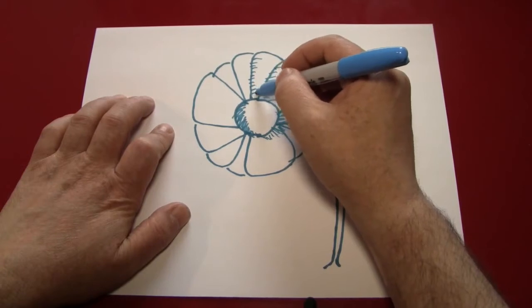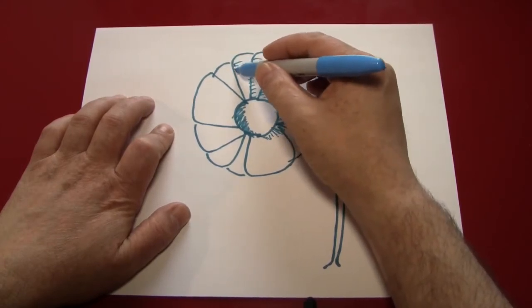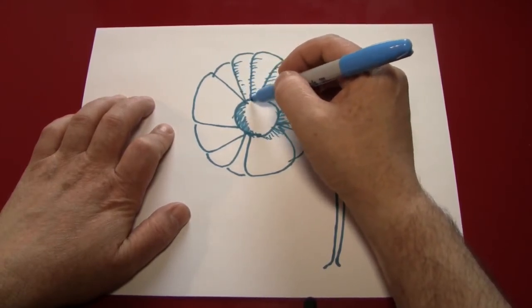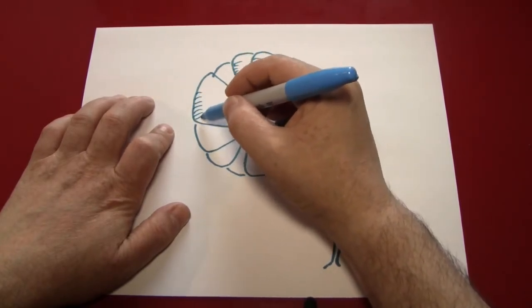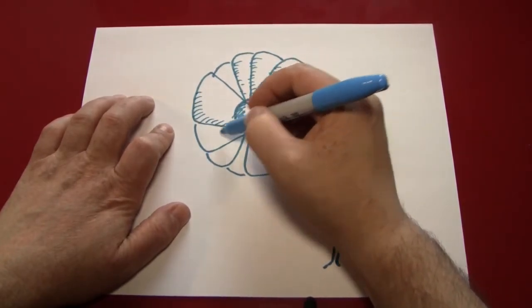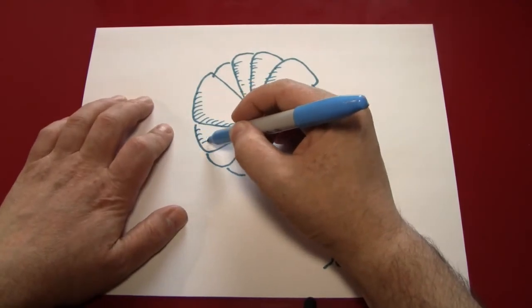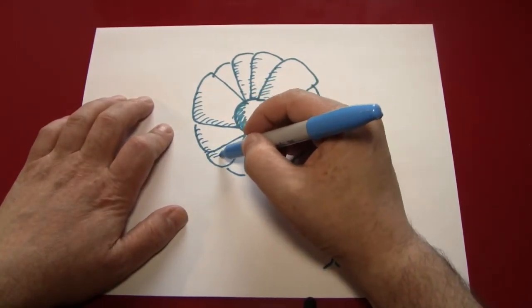As usual, I've put the light source to the right of the picture. And you can see that the parts farther away from the light source, the parts on the left, are the parts that get shadowed.